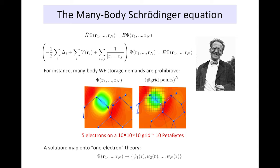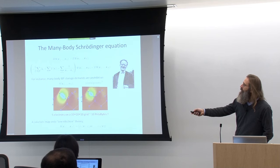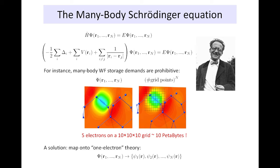We have a kinetic energy part, a local potential, and here the source of all our trouble: the electron-electron interaction. So why is this unsolvable? Well, it's unsolvable on many levels. For instance, just storing this many-body wave function — which essentially depends on all the electronic spatial coordinates — is already impossible. If I discretize it on a grid of 10×10×10 points, storing this object for five electrons already amounts to 10 petabytes of storage in complex numbers.